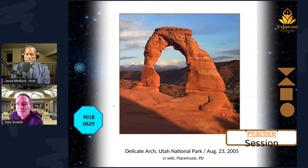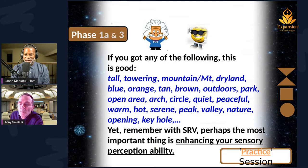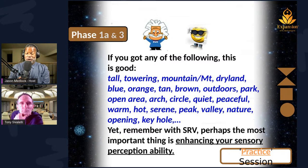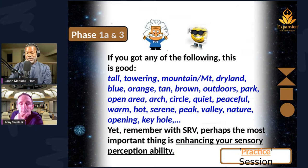Did anybody else get anything? Just put it in the chat. Any of these things are good information: mountain, dry land, colors of blue, orange, tan, brown — that's more phase two as you get deeper. If somebody were to take the course, there's a place for a lot of these different pieces of information. But anybody who got quiet, peaceful, or hot and warm like Jason's sister — a serene feel, a valley, nature feel, any of those type of things — a circle. For her it's almost like a phase four, when you're pulling more information out.